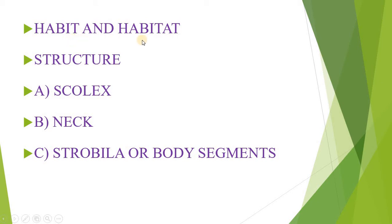Habit and Habitat: Taenia solium, the pork tapeworm of man. The adult lives in the intestine of man, leading an endoparasitic life. Its life history is completed in two hosts — it is digenetic — man being the primary host and pig as the secondary host. Except the adult, various stages of its life history are passed in the body of secondary hosts. Other animals like goat, cattle, horse, and monkey may also serve as secondary hosts.